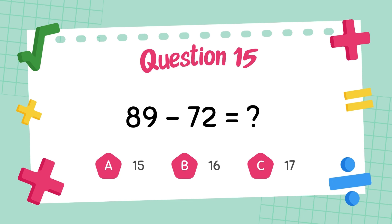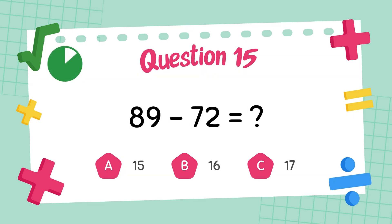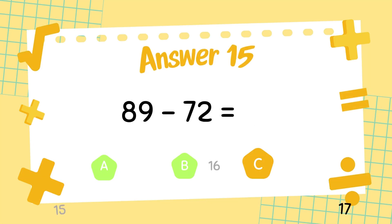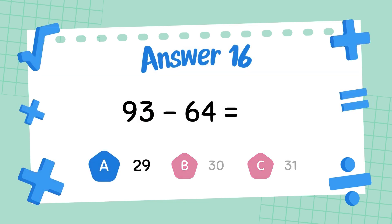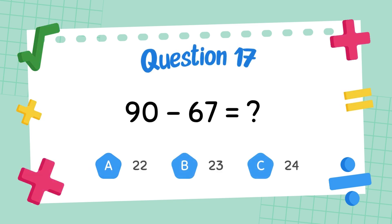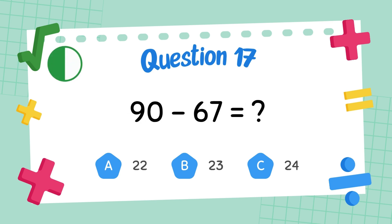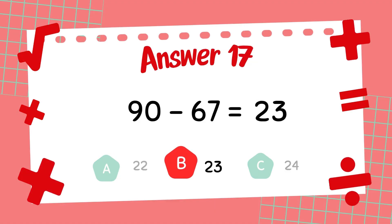What is 89 minus 72? The answer is 17. What is 93 minus 64? The answer is 29. What is 90 minus 67? The answer is 23.